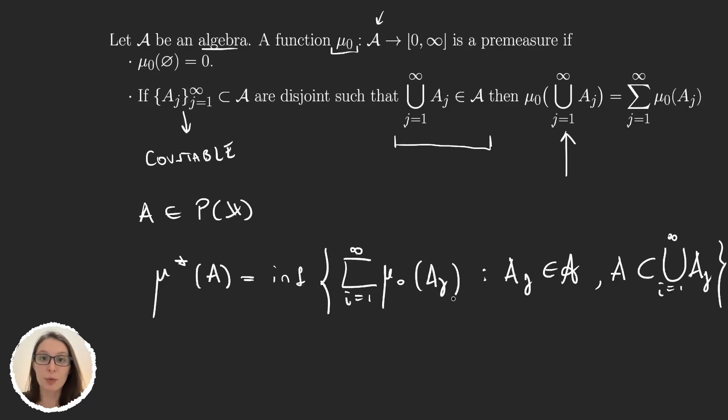Now, if you saw that video I just mentioned, then you know that this μ* is an outer measure. So now we found a way of obtaining outer measures from premeasures, and we already know how to obtain measures from outer measures.